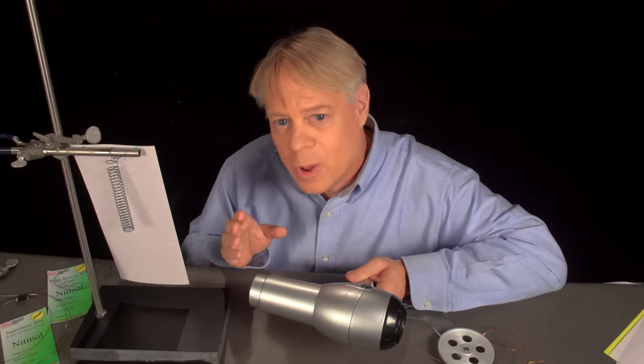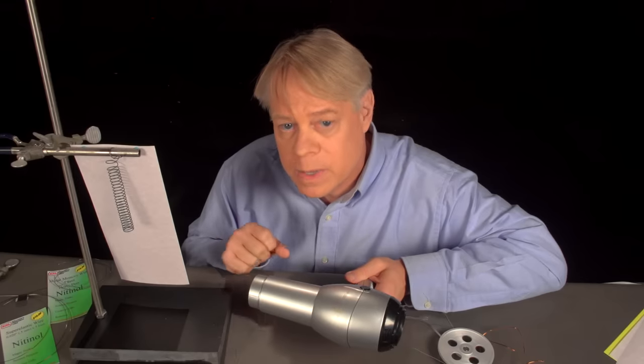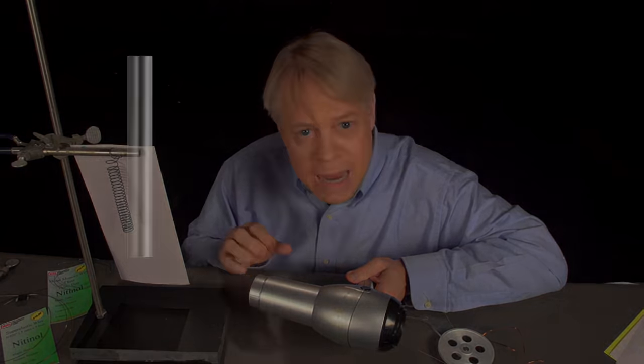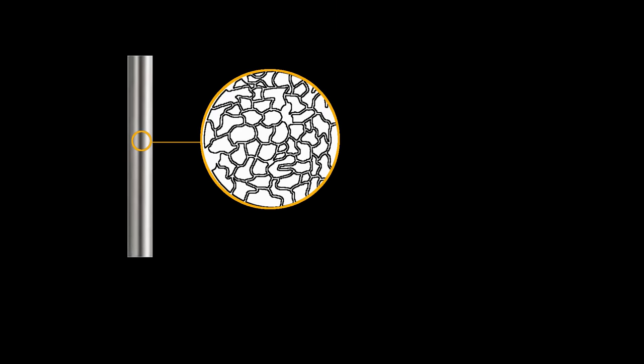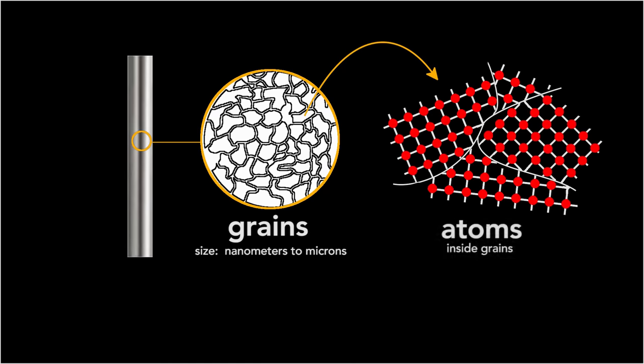So, why does nitinol have this memory? The key is understanding how the atoms move in response to stretching and bending of a piece of nitinol. Typically, any metal, whether nitinol or not, is comprised of small grains that, depending on the material, are microns to nanometers across.